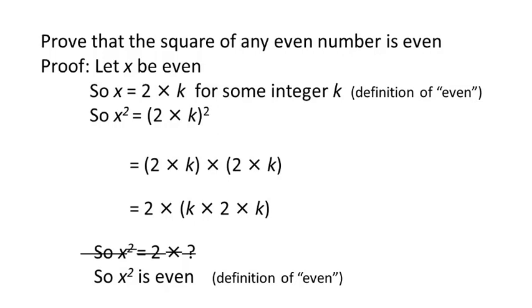Here's what you get. We can then cross out our tentative second last line, as we already have in the line above, that x squared equals twice some number, namely k times 2 times k. The proof is now complete. Take a moment to look at it, noting how the assumption that x is even leads inevitably to the conclusion that x squared is even.